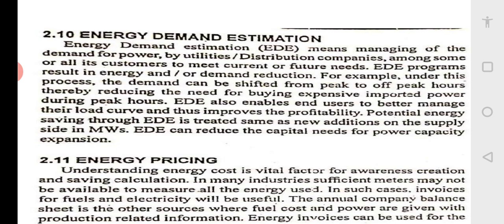If you are able to save energy through demand estimation, that is as good as generating new power. To deliver one kilowatt to your house, we need to generate about two kilowatts — accounting for transmission and distribution losses. So one unit saved is equal to two units produced.